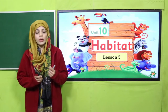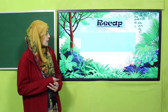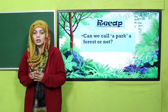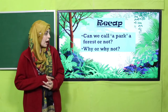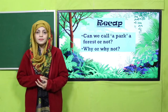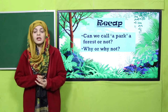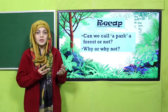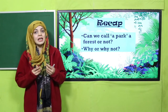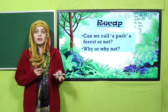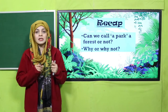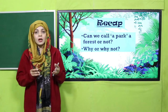Before moving on towards the lesson, let's quickly recap what we did in the previous lesson. We studied about forest habitat and aquatic habitat. Can we call a park a forest or not? Yes — because if it has trees, different types of shrubs, and different kinds of animals, then it can be called a forest, just like Changa Manga, which is a man-made forest with lots of animals, different types of trees, shrubs, and herbs.